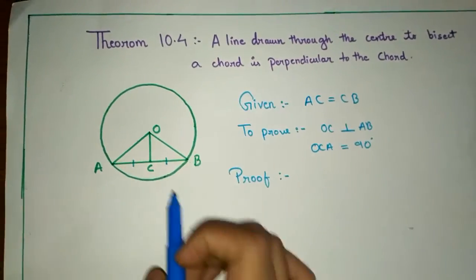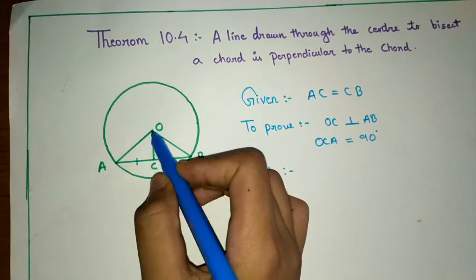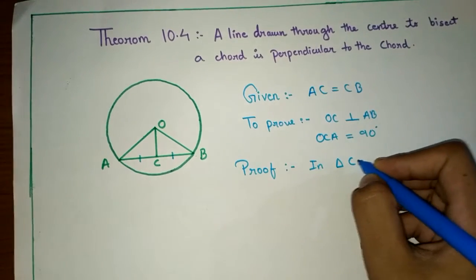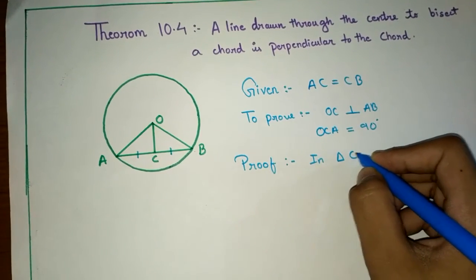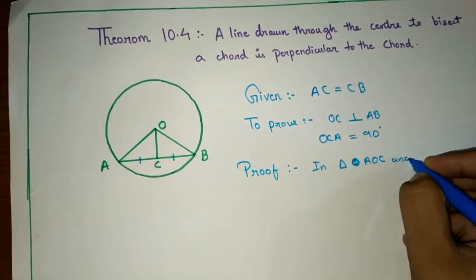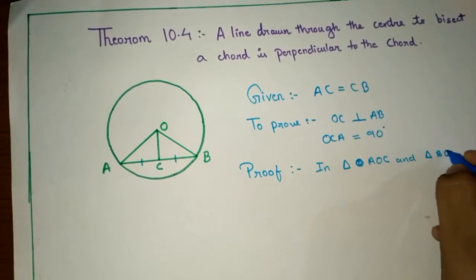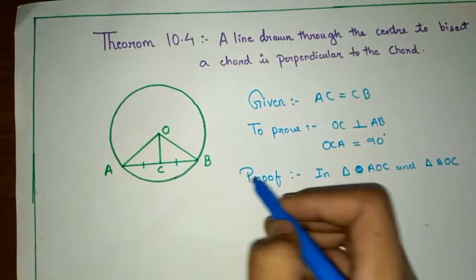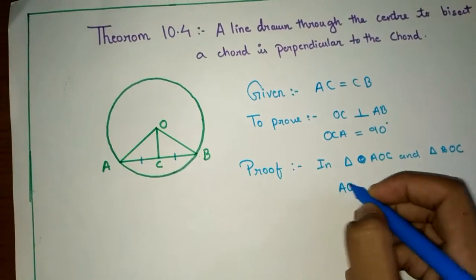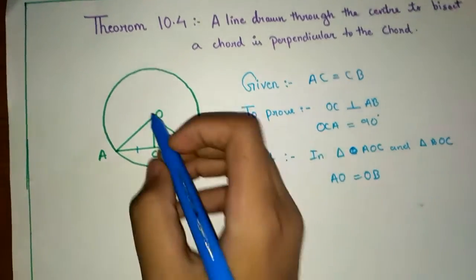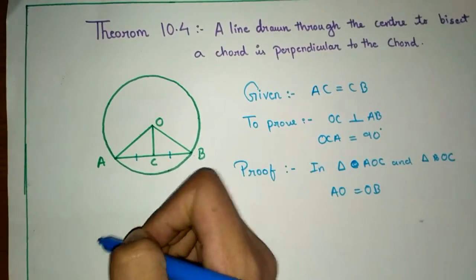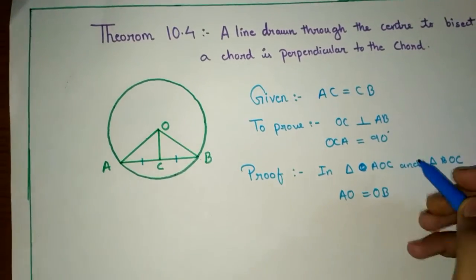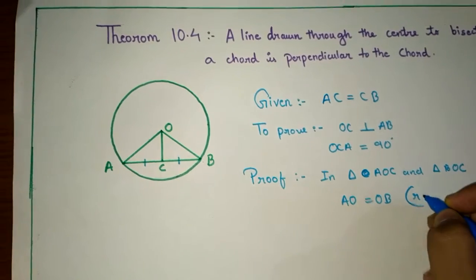This proof uses the same process — first I will make these two triangles congruent. In triangle AOC and triangle BOC, AO is equal to OB, because this is the center and these two are radii. We know that the radius of a circle at any part is equal.